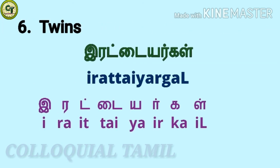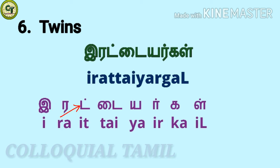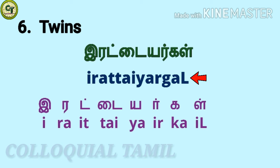For twins: iratai ergal. 'e' a short vowel, 'ra' a short letter, 'it' a consonant, 'tai' a short letter, 'ir' a consonant, 'ka' a short letter, 'il' a consonant — together: iratai ergal.